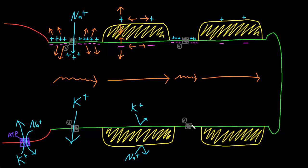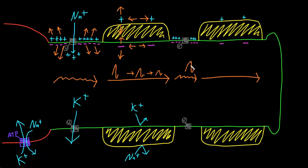Myelinated axons have most of their voltage-gated ion channels at the nodes of Ranvier, so that while an action potential is conducted faster through a myelinated segment, it actually does decrease in size a little bit as it's going along. The nodes of Ranvier, therefore, are necessary to regenerate the full size of the action potential so that it can continue all the way down the axon.